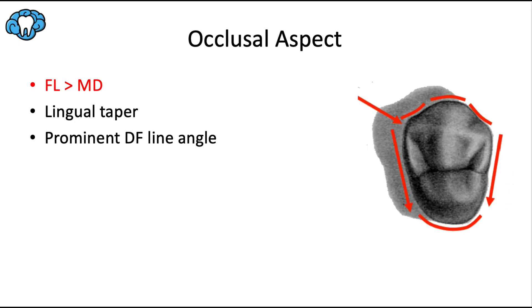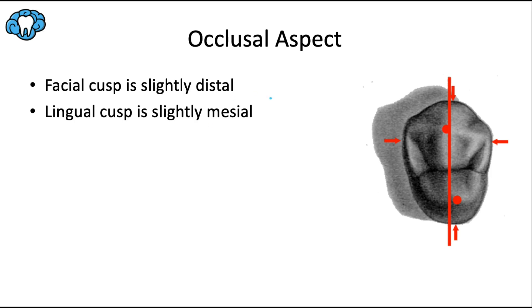On the occlusal view: the facial-lingual dimension is greater than the mesial-distal dimension. The tooth tapers from facial to lingual to fit the U-shaped arch. There's a prominent distofacial line angle that's sharper than the more rounded mesiofacial line angle. The facial cusp tip is slightly distal of center; the lingual cusp tip is slightly mesial of center, making the tooth a bit asymmetrical. The mesial and distal proximal contacts are facial of center to allow for a larger lingual embrasure.